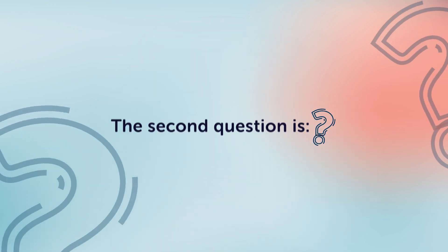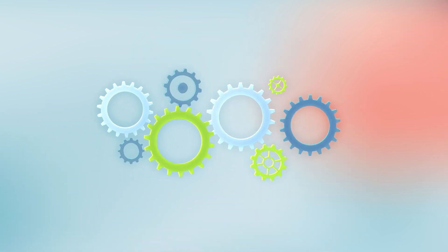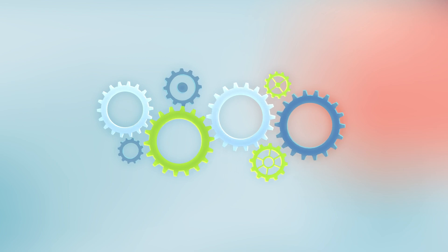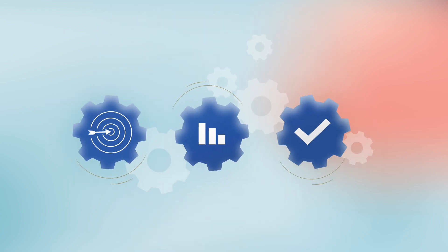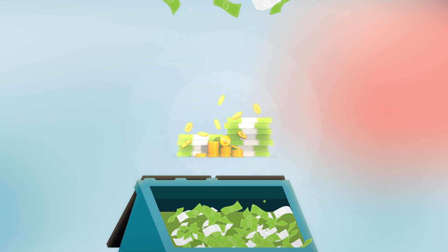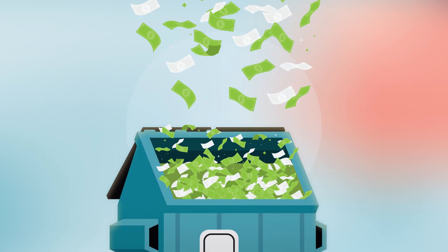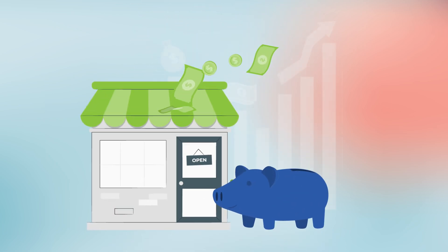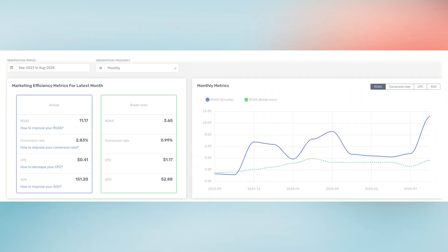The second question is: is my store efficient enough to turn a profit through advertising? Many stores begin advertising blindly without knowing if they are efficient enough to earn money back. Some just waste money since they can never profit without improving their efficiency. Magnify Profit provides break-even efficiency analysis and continuous monitoring to ensure your store, ad accounts, and campaigns are operating profitably.